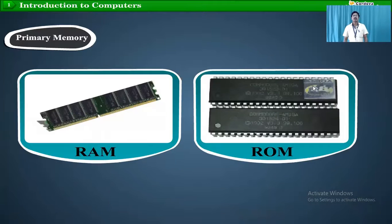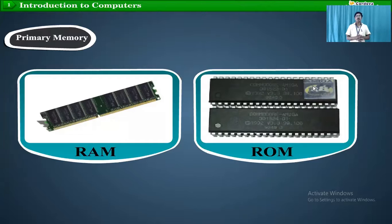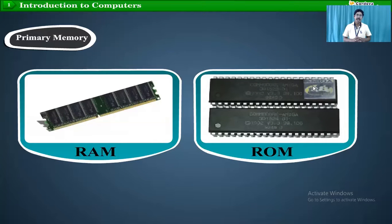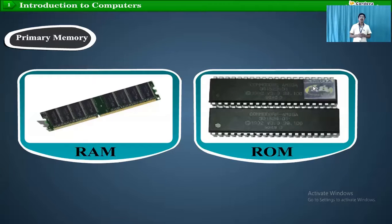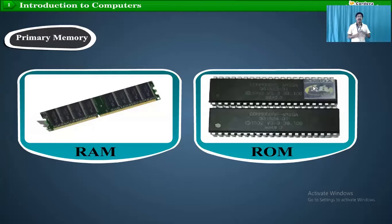Primary memory is divided into two types: RAM and ROM. RAM is random access memory and ROM is read-only memory. Some information is stored permanently in ROM and it will execute permanently. But in RAM, when you open any movies, that movie from the hard disk comes into the RAM, from RAM it will execute and display on your screen.